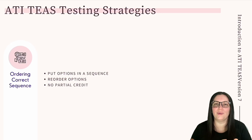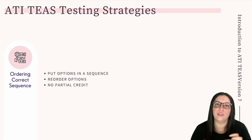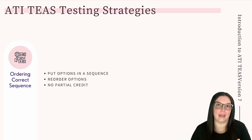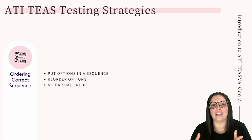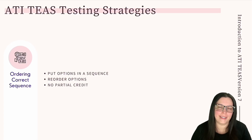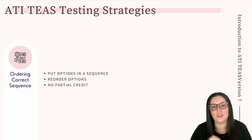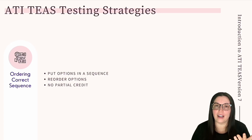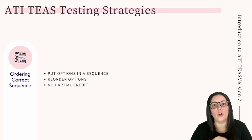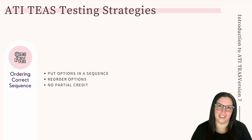Let's take a closer look at ordering correct sequence questions. You are required to put the available options in the correct order. For example, a question may present a series of steps to accomplish a task, but the options will be out of order. Each step must be placed in the correct order; if they are not, it is deemed incorrect. As always, there is no partial credit if the steps are not placed in the correct order.